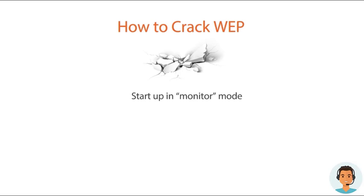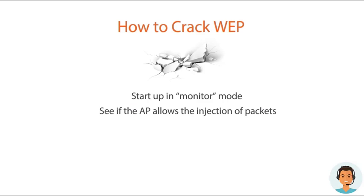Knowing that these initialization vectors exist, it's very easy to crack WEP. There are several tools but they all basically do the same thing. You'll first want to start up the wireless interface in what we refer to as monitor mode on a specific access point channel. Once we do that, we need to check to see if the access point allows for the injection of packets. If it does, I'm then going to use a tool such as Aireplay to do a fake authentication with the access point.